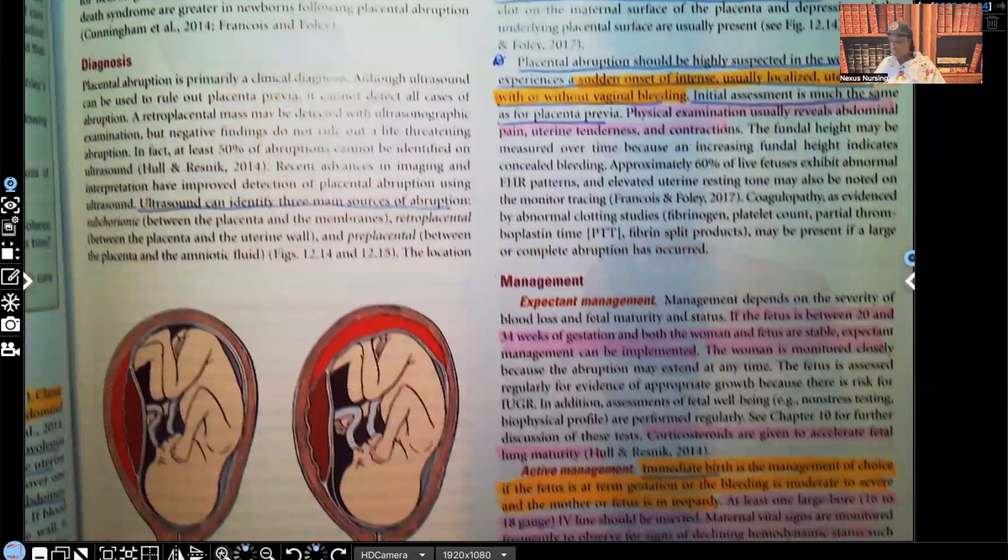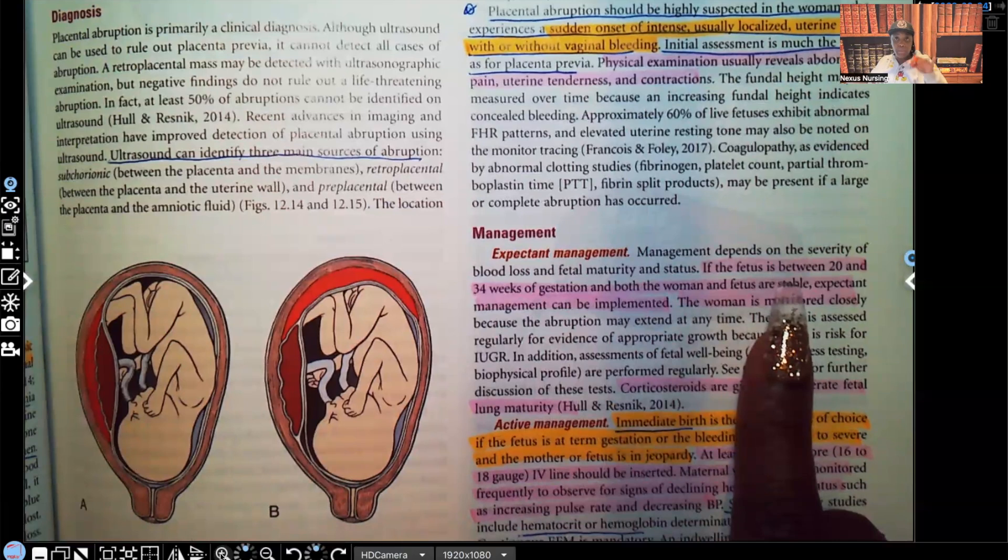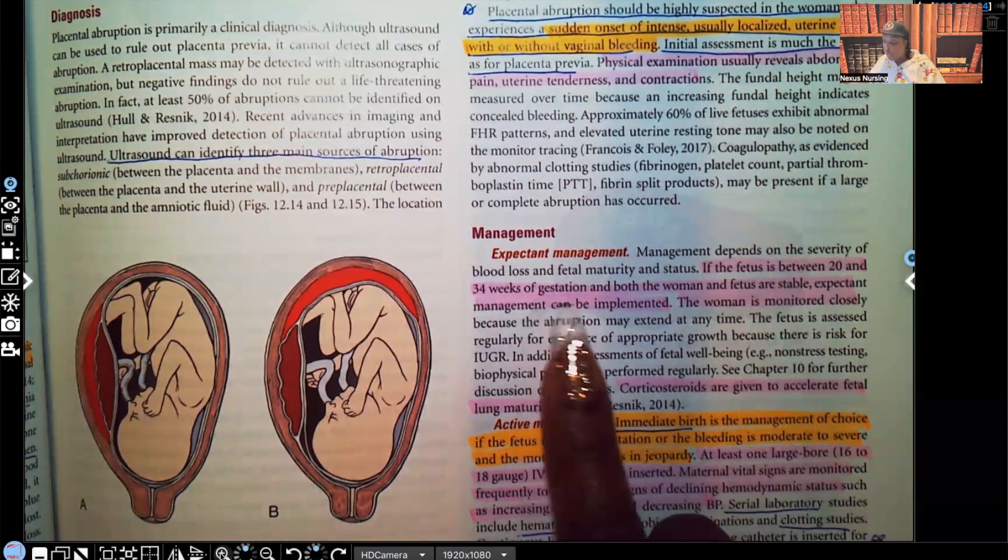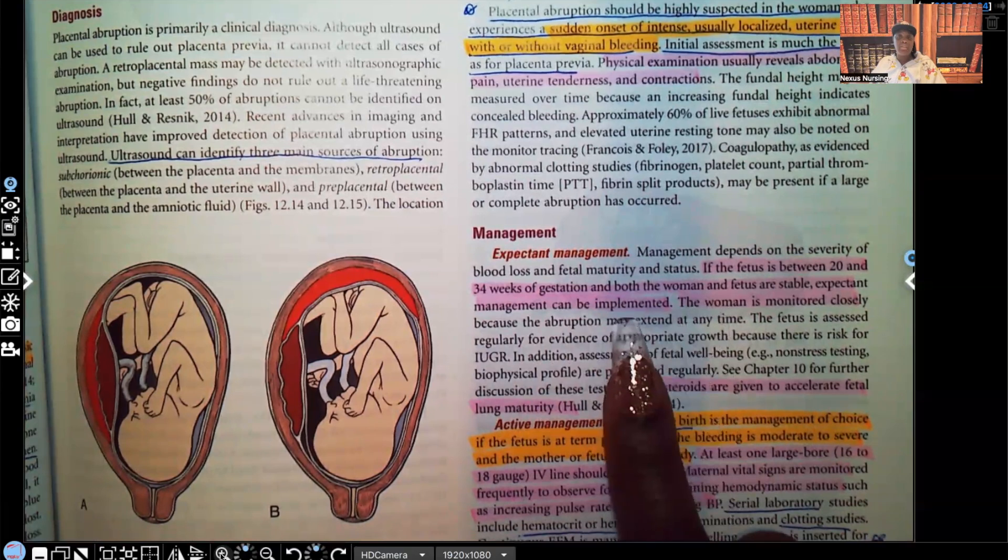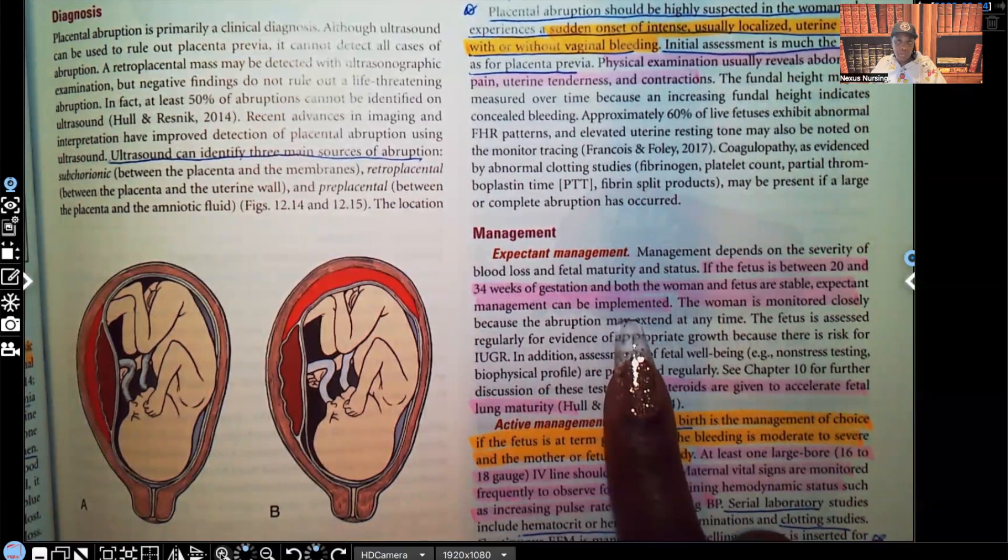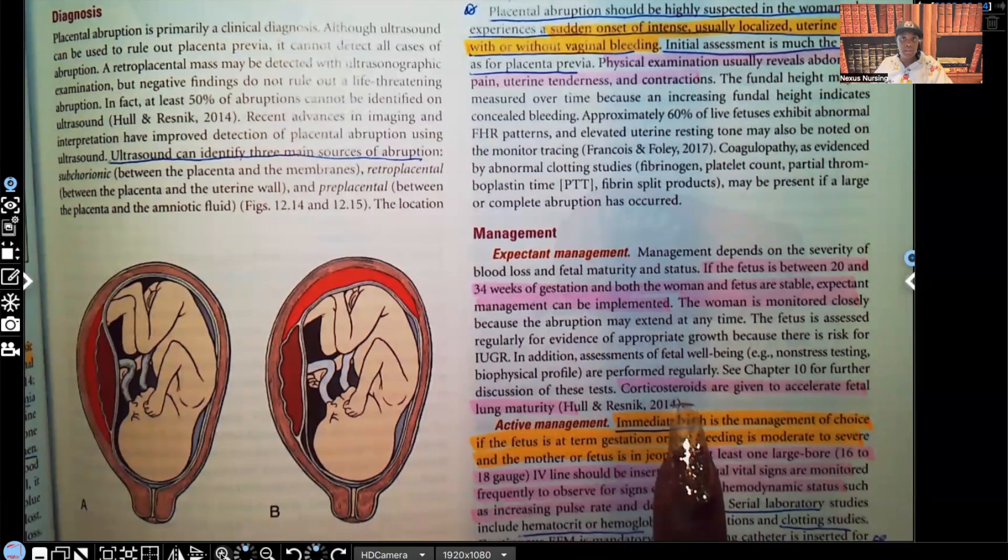Let's talk about management. For expected management, if the fetus is between 20 weeks, remember 20 weeks viability, and 34 weeks of gestation and both the woman and the fetus are stable, expected management is going to be implemented. We're just going to monitor very closely and then intervene as needed. However, corticosteroids are going to be given to accelerate the fetal lung maturity. Remember surfactant? That's what helps those lungs to expand so the fetus can breathe on its own outside of the womb.